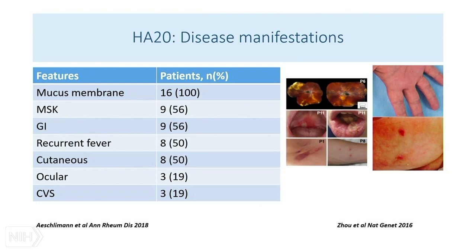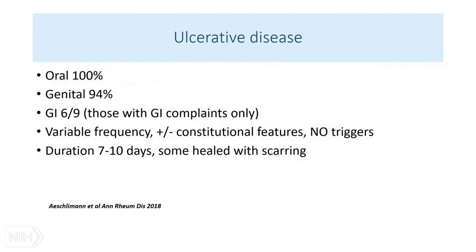There are not many patients reported. We looked at the first 15, found one other from Dr. Zhu's NIH study, and developed a clinical protocol to evaluate them. These patients look a lot like Behçet's — all had ulcerations of mucous membranes, 56% had musculoskeletal symptoms, similarly with gastrointestinal symptoms. Different from Behçet's, half had recurrent fevers, placing them more in the autoinflammatory category. Half had various skin rashes. Only three had ocular manifestations, but they were quite severe — our two girls and one other patient. There were also some cardiovascular manifestations in a few of the first 16 patients.